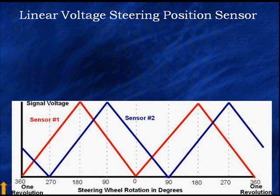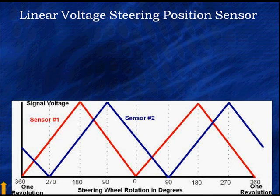Here is the output of a steering angle sensor used by Bosch — it has two sensors that go from zero up to a maximum and back down again. When turning left, the blue sensor goes high before the red; when turning right, the red sensor goes high before the blue. The vehicle keeps track and calculates how many times it goes from zero to 360 degrees to know the location of the steering wheel. All of these sensors — steering and yaw — must be zeroed for the system to work properly.